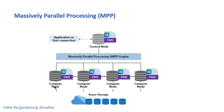If required, data is exchanged between compute nodes through DMS. Once the data is processed by the compute nodes, it returns the data to the control node. The control node returns the data back to the application or to the user. So this MPP engine acts as a brain for this whole architecture.